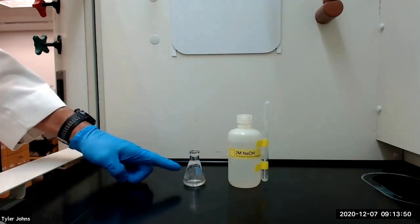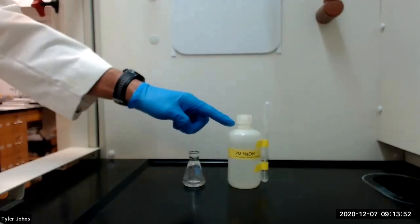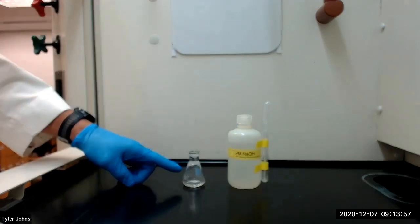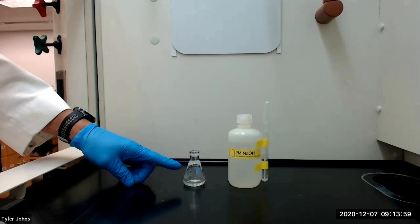After the solution is homogenous, we will next add 0.9 milliliters of aqueous 2 molar sodium hydroxide solution to the Erlenmeyer flask and swirl until the bright yellow color fades to pale yellow.